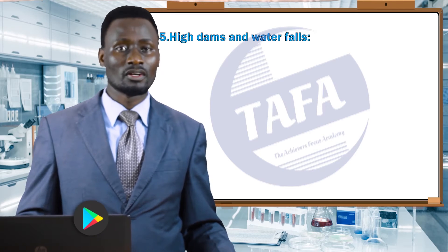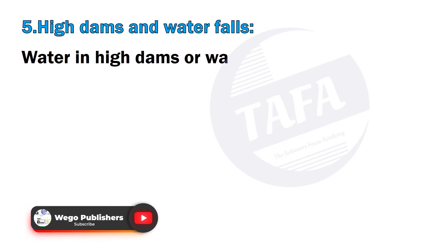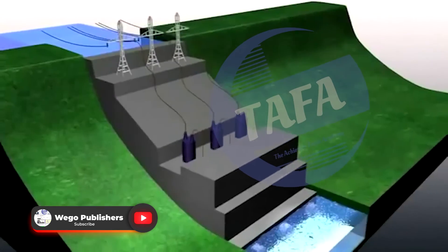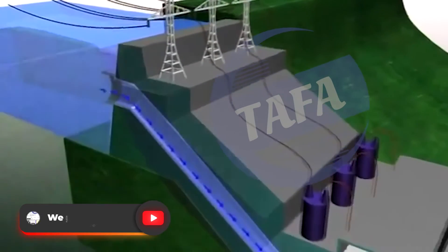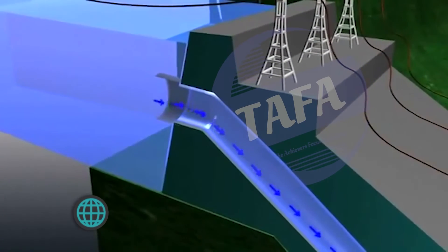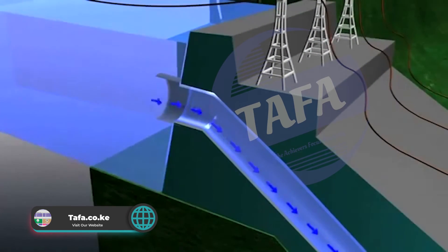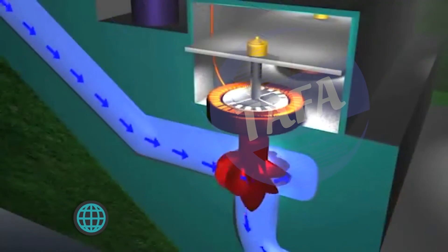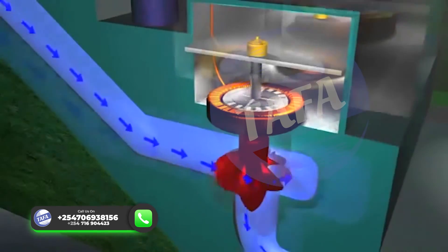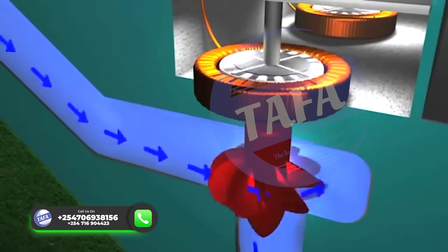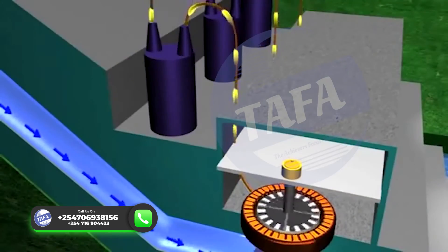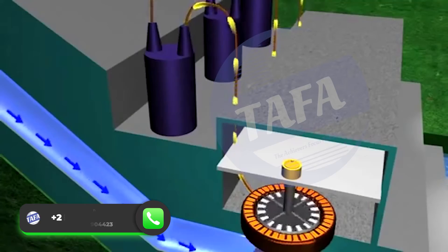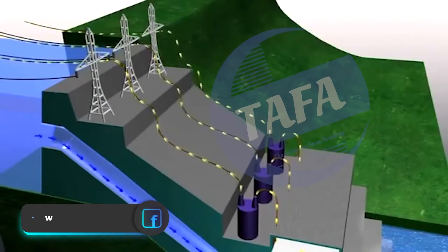Another source of energy is high dams and waterfalls. Water in high dams or waterfalls possesses stored potential energy. When the water falls through some height, the potential energy is converted to kinetic energy, which can be used to turn turbines in hydroelectric power stations to produce electricity.